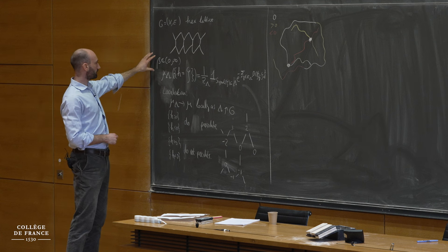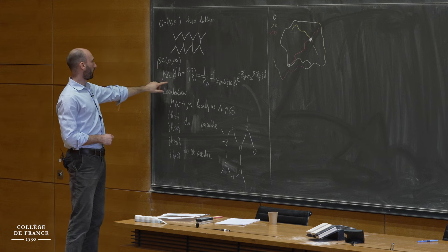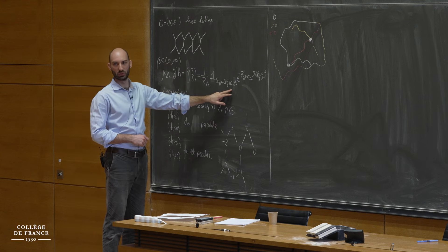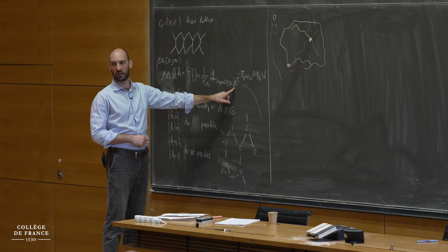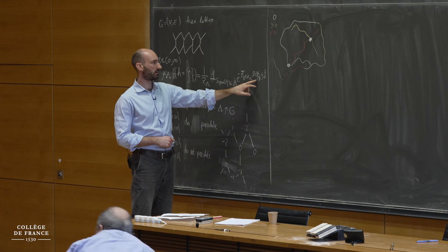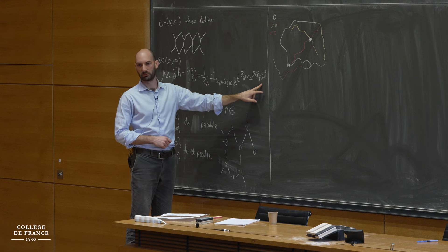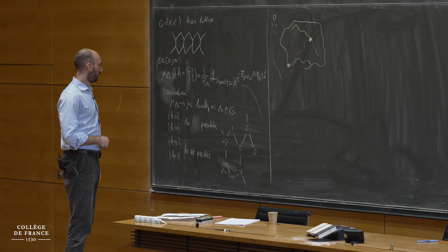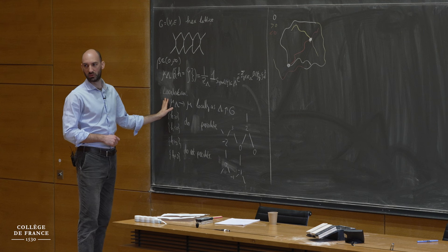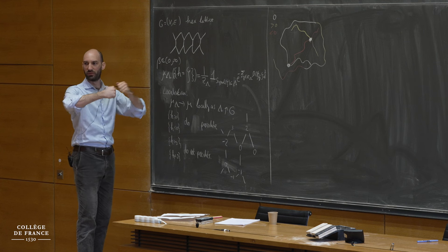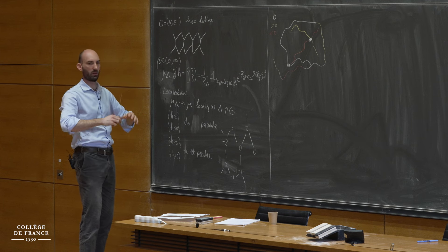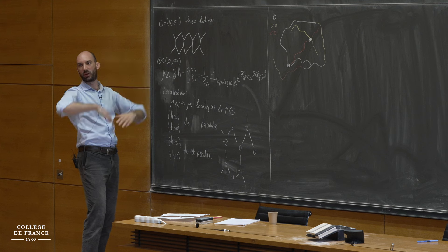So we work on the hexagonal lattice. We have some inverse temperature and we sample a height function according to this law, where we only look at height functions whose support is contained in lambda. Lambda is a domain and the probability of each height function is proportional to e to the minus beta times the height differences squared. We want to prove that you have delocalization when beta is very small.